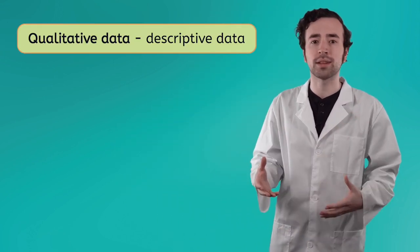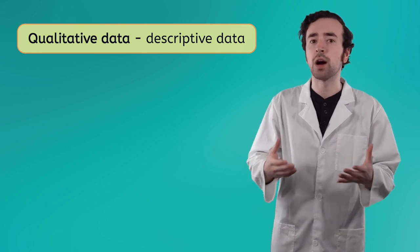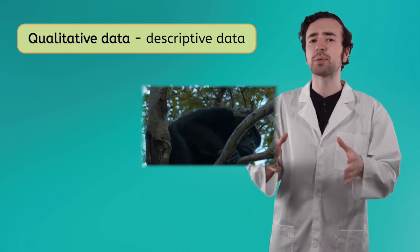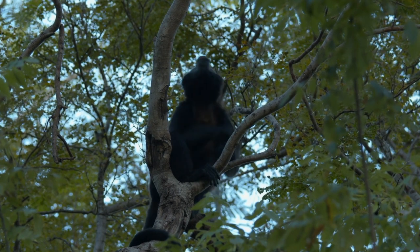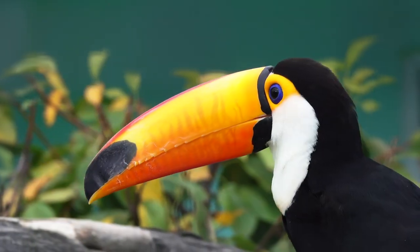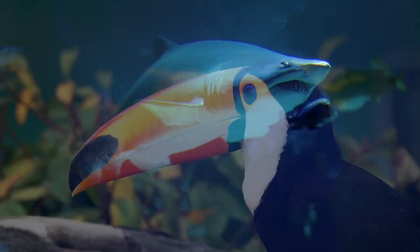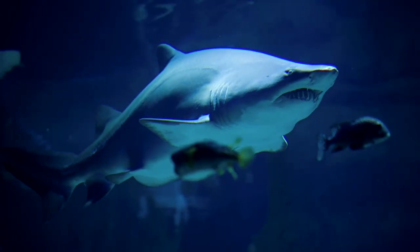There are two main types of data: quantitative and qualitative. Qualitative data is data that cannot be measured in numbers. Instead, it's descriptive data that describes the qualities or characteristics of something. Some examples of this would be the sound of a howler monkey, the color of a toucan's beak, or the texture of a shark's skin. Can you think of some other examples of qualitative data? Pause the video here to jot down your ideas in your guided notes.